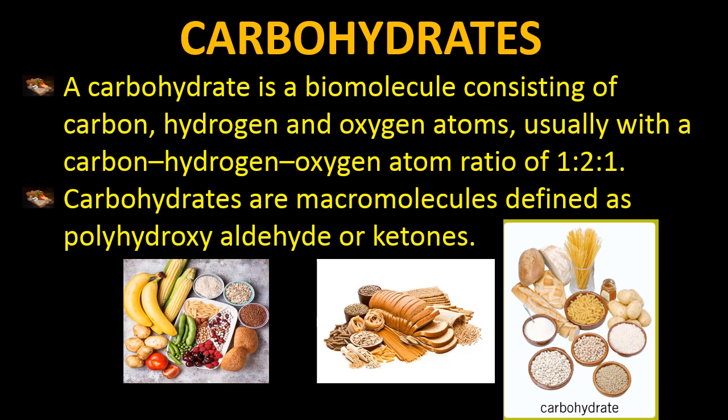If the functional group is aldehyde, we are talking about glucose. If the functional group is ketonic, we are talking about fructose. The number of carbon, hydrogen, and oxygen atoms are the same, but the functional groups are different in glucose and fructose. Glucose is present in wheat, bread, and rice, while fructose is a carbohydrate present in fruits.